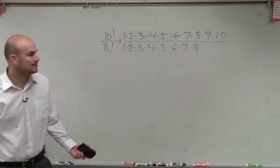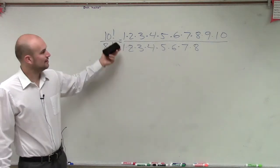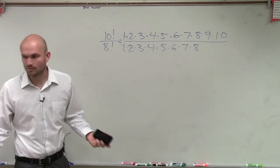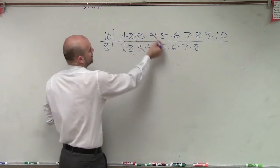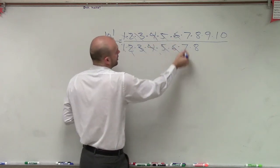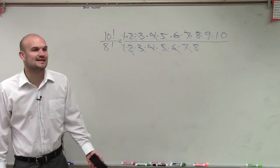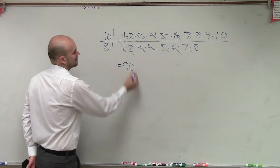And then what we notice, ladies and gentlemen, is when we have one factorial over another, you notice that this 1 divided by 1 equals 1, 2 divided by 2 equals 1, and so on. Therefore, just leaving us with 9 times 10. So therefore, this final answer is going to equal 90.